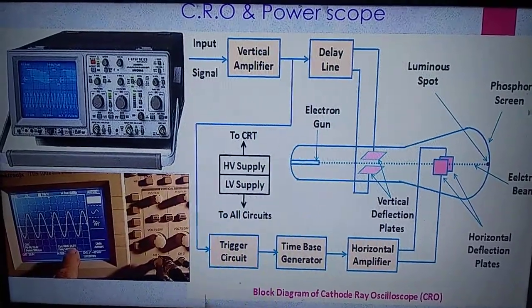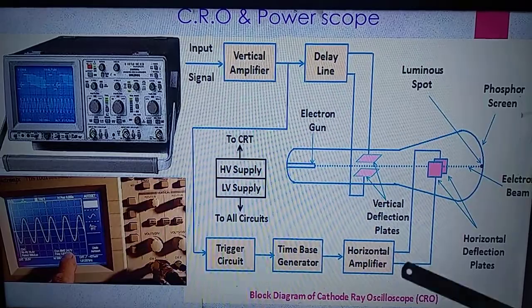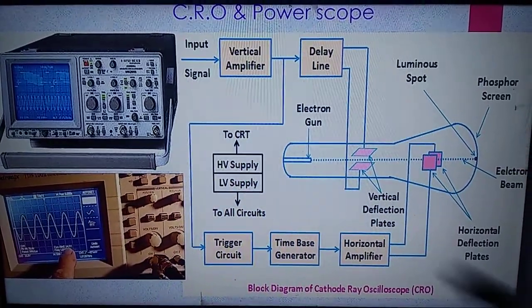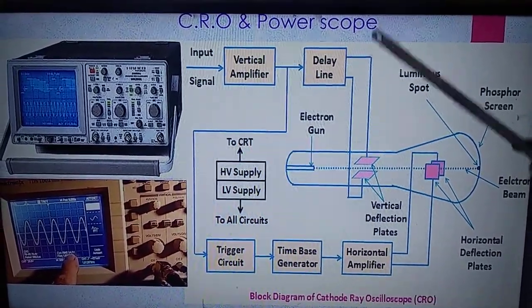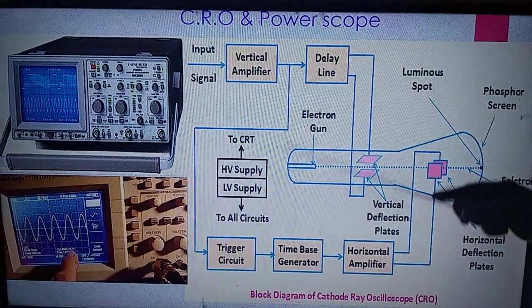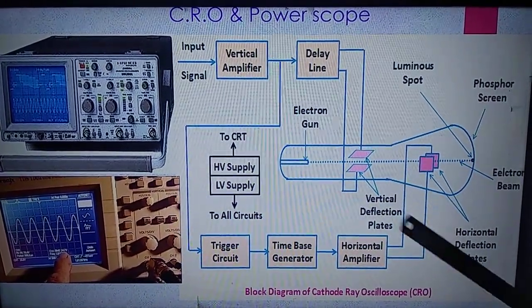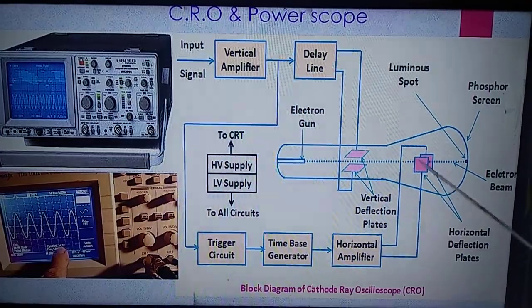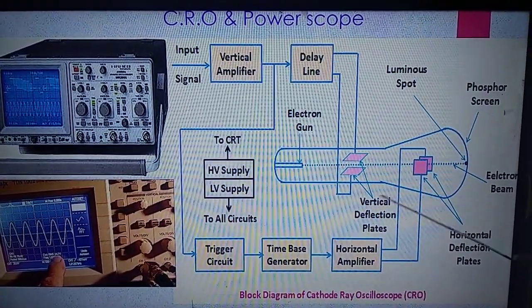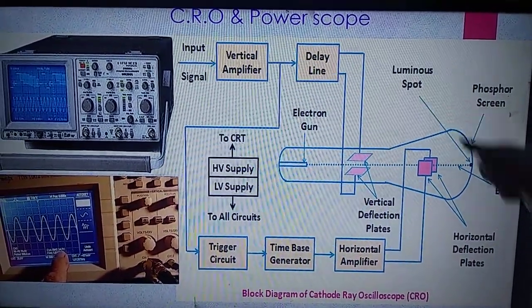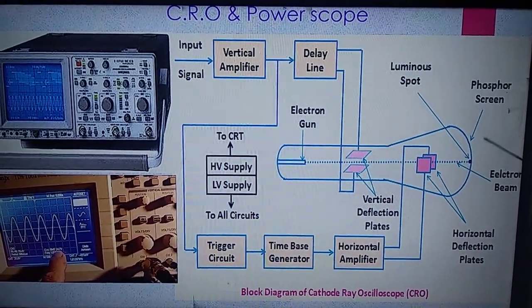CRO is nothing but cathode ray oscilloscope. Power scope and CRO construction is the same; there is little difference between CRO and power scope. So first we will see CRO and then we will see the power scope. The main parts of CRO are the cathode ray tube, that is CRT, then vertical amplifier and horizontal amplifier. Now first we will see the cathode ray tube.